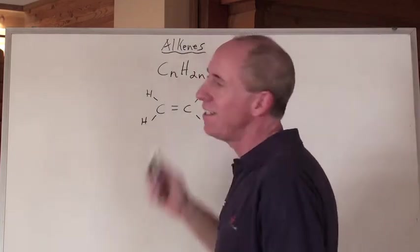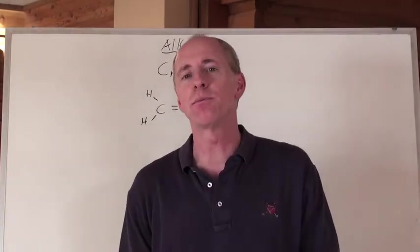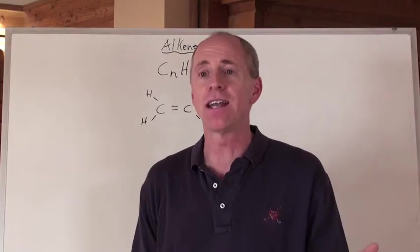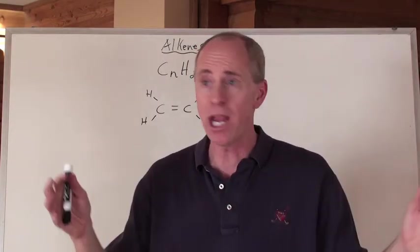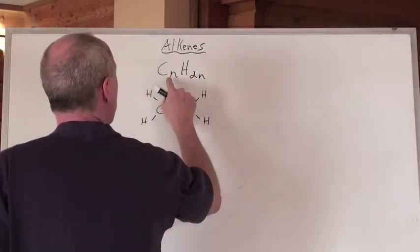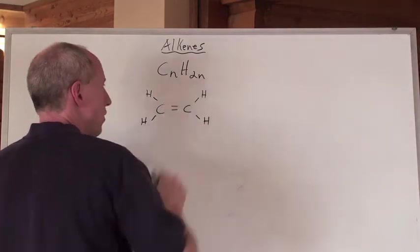So alkenes - they end in 'ene' because there's a double bond present. 'Alk' because they're aliphatic still and they are in chains. So the general formula is CnH2n for these.